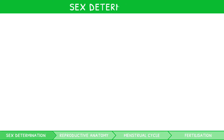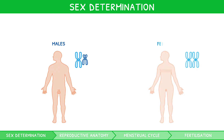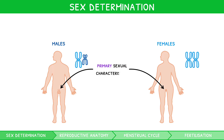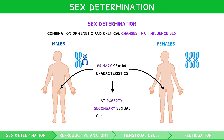Every human at birth is either biologically male or female, characterized by distinct anatomy known as the primary sexual characteristics. The combination of genetic and chemical changes that influence this outcome are collectively termed sex determination. Beyond this, when puberty is reached, there are further anatomical changes known as secondary sexual characteristics.